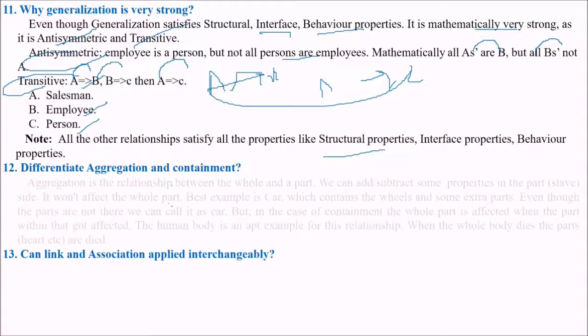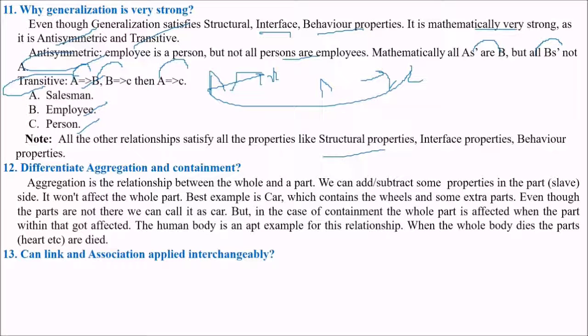Differentiate aggregation and containment. Aggregation is the relationship between whole and a part. We can add or subtract some properties in the part that is the slave side. It won't affect the whole party. Best example you can have is a car. It contains many realms of extra parts. Even though the parts are not there, we can still call it a car.